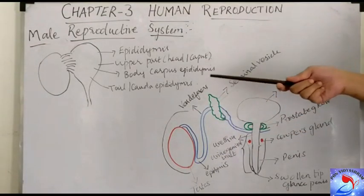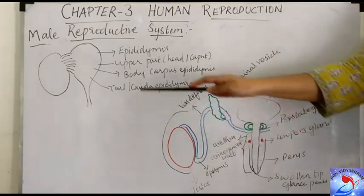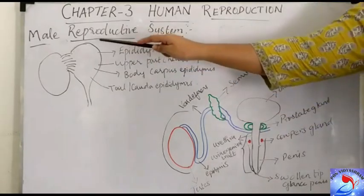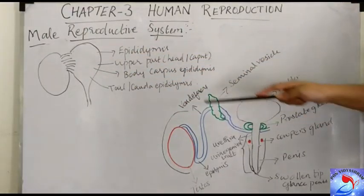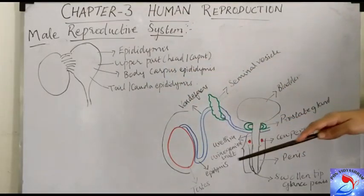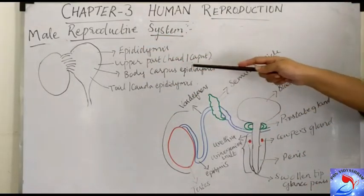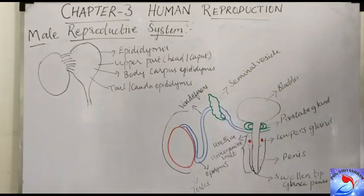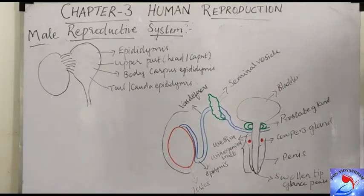After the sperm is produced in the seminiferous tubules of the testes, it is passed through the rete testis and carried by the vasa efferentia to the epididymis. The epididymis is a very coiled structure with three parts: the upper part called the caput epididymis, the body called the corpus epididymis, and the tail called the cauda epididymis, which extends into a duct. In the epididymis, the sperm is stored for 18 to 24 hours and attains physiological maturity — a process called capacitation.